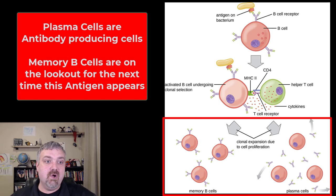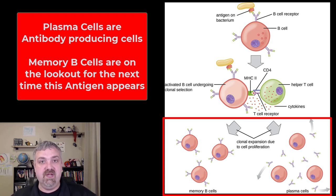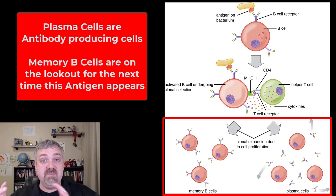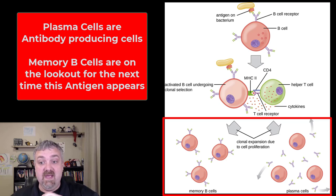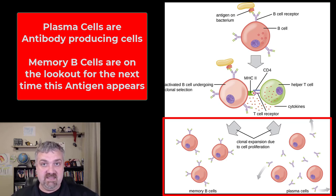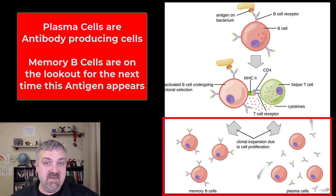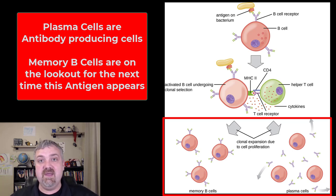Now we're going to go through what's called clonal expansion, where B cells become plasma cells that will make antibodies. And some of them are going to become memory B cells. Plasma cells are the actual version of a B cell that produces antibodies.